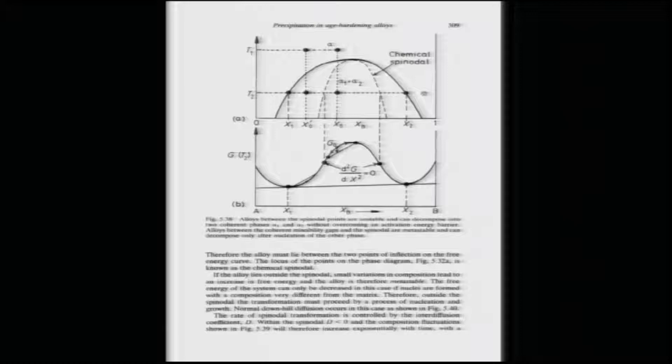If I take an alloy with composition X₀ at temperature T₁, it will have a single-phase alpha. Once I quench this alloy to T₂, if the alloy has any small composition fluctuations, those fluctuations will grow without nucleation and the microstructure will typically look like a two-phase microstructure decomposed from a single phase. This phase diagram results from the free energy G versus composition diagram shown at the bottom.